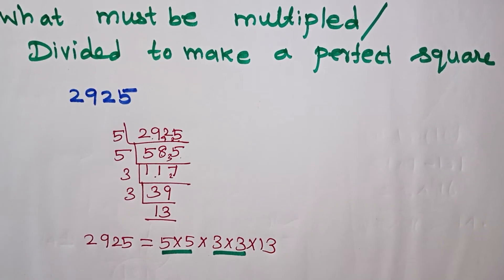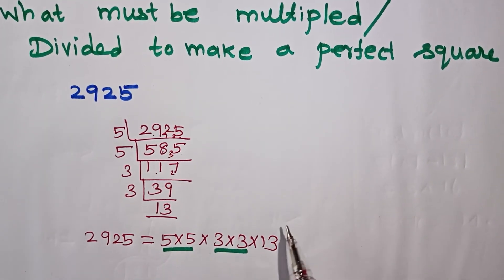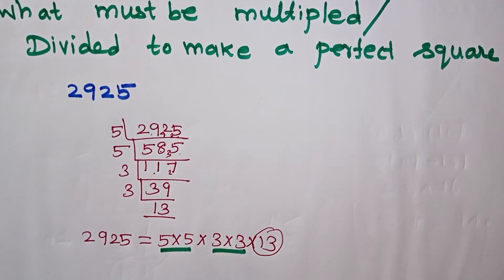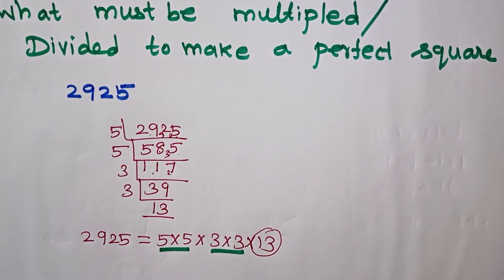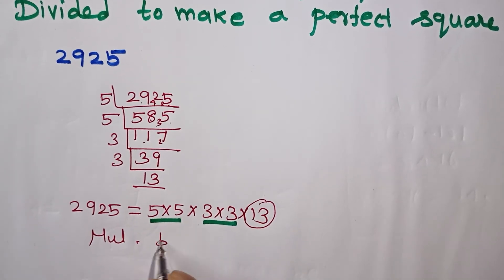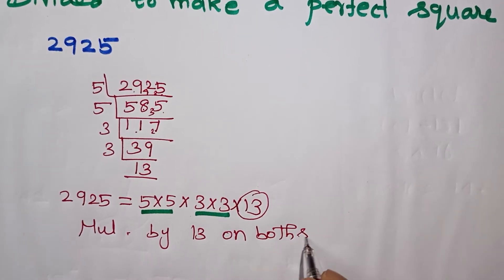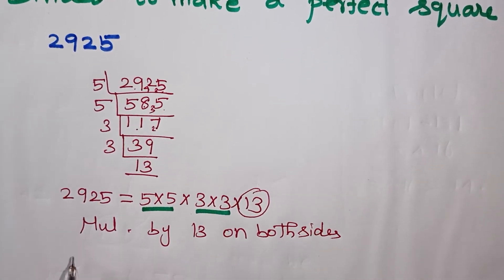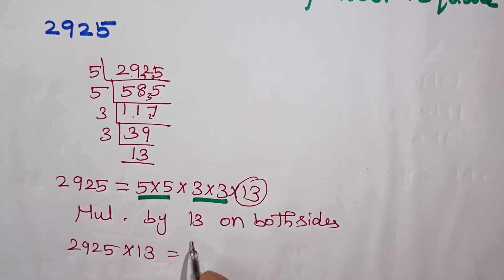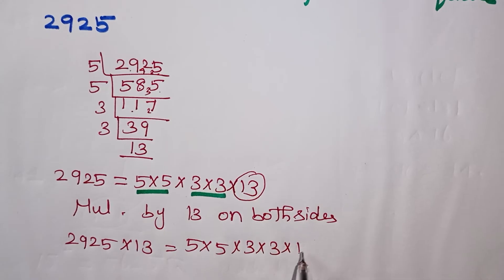We have 5 appearing twice and 3 appearing twice, but 13 appears only once — it has no pair. So to make a perfect square, we must multiply by 13. So 2925 multiplied by 13 gives a perfect square. The pairs are: 2 fives, 2 threes, 2 thirteens.